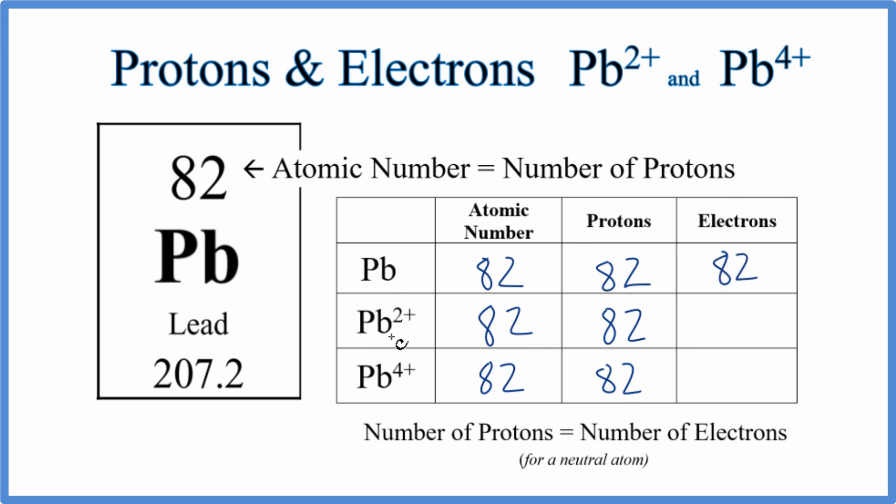For the lead 2 ion, Pb²⁺, that positive there, if you lose electrons, electrons are negative and you become more positive. So the 2 plus, that means we lost two electrons. 82 minus 2, that's 80.